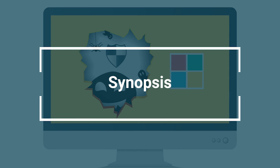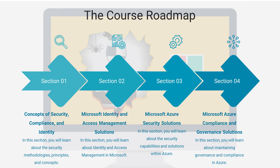Let's talk about what is part of volume one of this course. There are four sections to volume one. We are going to start off with section one, which is base concepts of security compliance and identity, where you'll learn security methodologies, security principles, and different concepts around protecting and governing your resources.